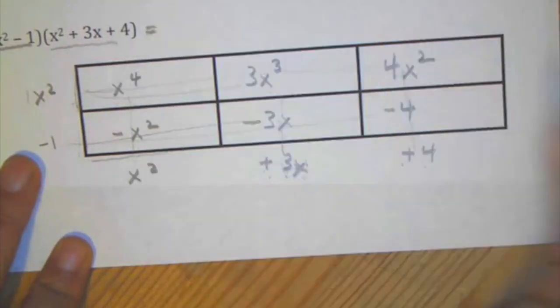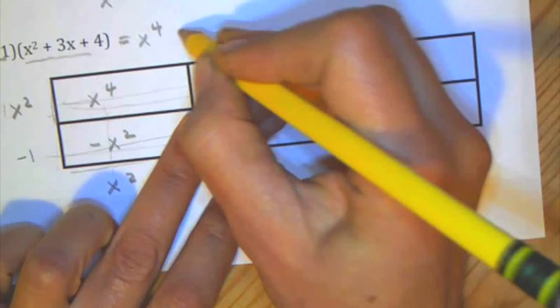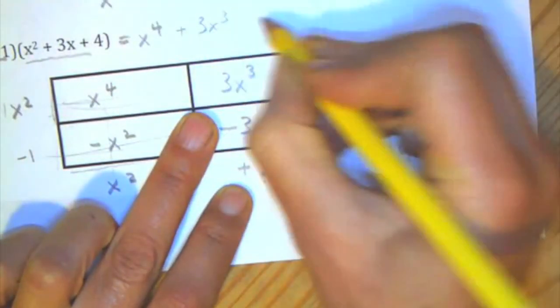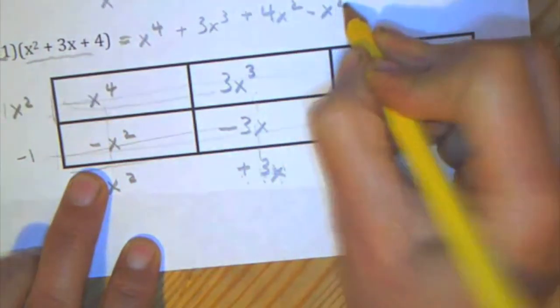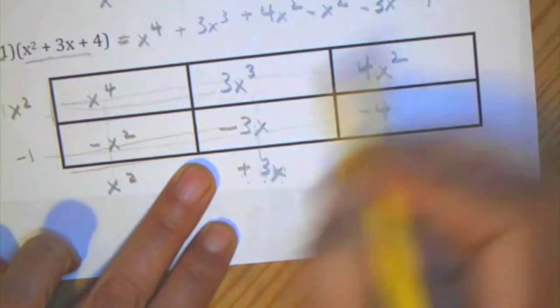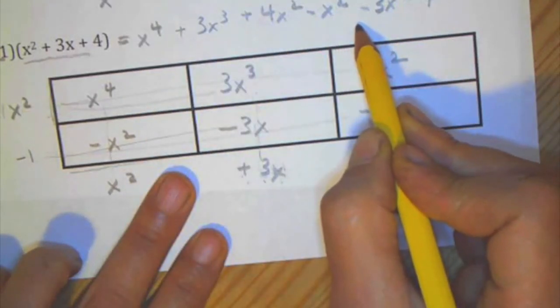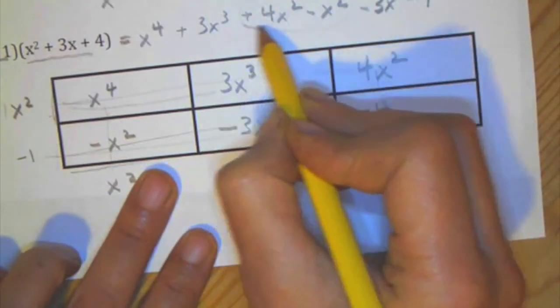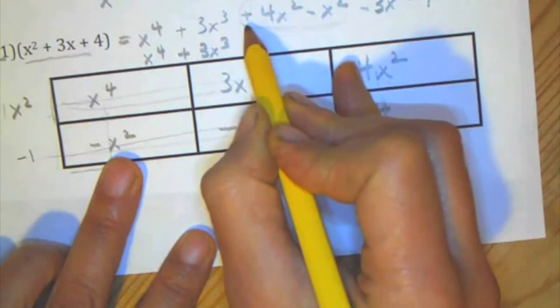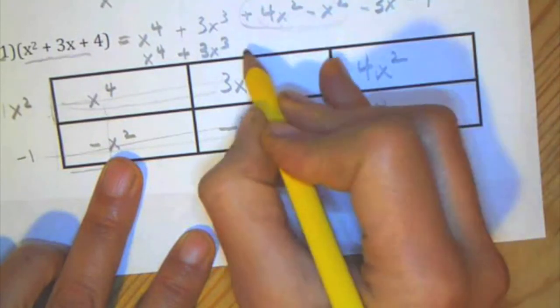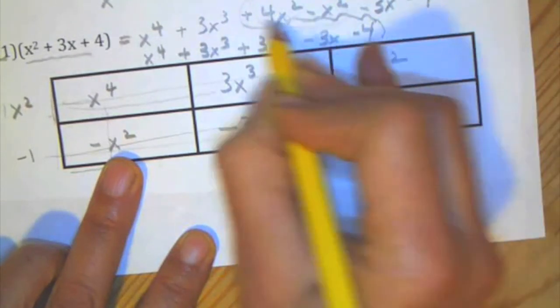And then you write all of your numbers down. So x to the fourth plus 3x cubed plus 4x squared minus x squared minus 3x minus 4. I look and I see do any things have the same variable and exponent. I can see that these two do. Once again, I want to make sure I have that sign in there. So everything's going to be exactly the same except I'm going to add plus 4x squared minus x squared. So that gives me positive 3x squared minus 3x minus 4. So this is going to be my final answer.